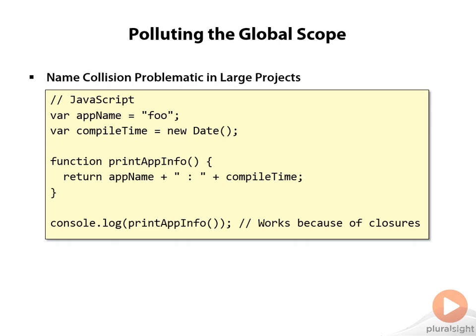This all works fine because when we call this function, we're using a closure to use the app name and compile. The problem is that if we have a lot of projects all doing the same sort of JavaScript, what happens if someone redefines compile time or print app info because a particular library uses those same variable or function names? As we saw earlier in this course, if we define a variable or function a second time, that new declaration takes over. We don't have the notion of an overloaded function or an error when you redefine a variable to tell us that this is a problem.